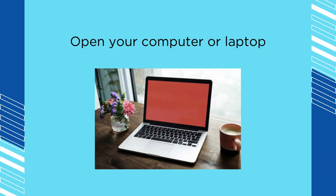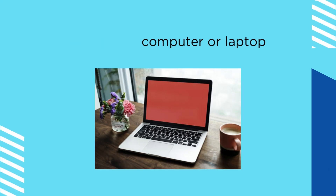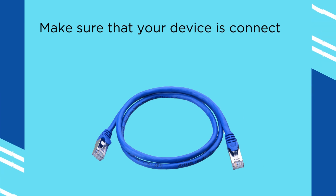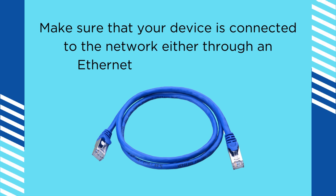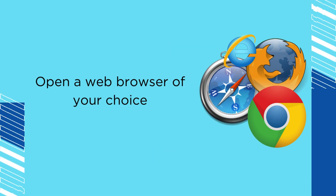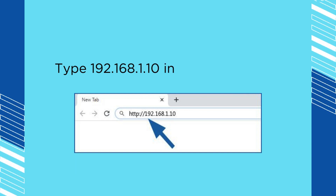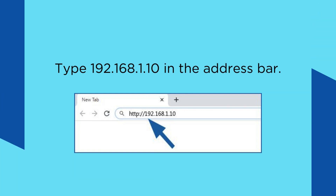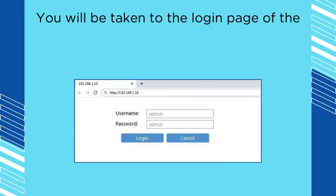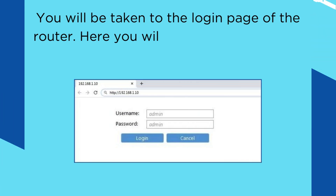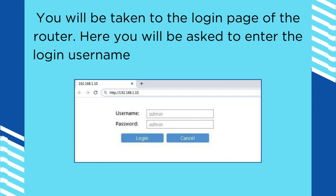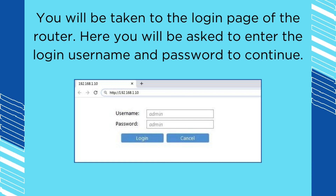Open your computer or laptop. Make sure that your device is connected to the network either through an Ethernet cable or wirelessly. Open a web browser of your choice. Type 192.168.1.10 in the address bar. You will be taken to the login page of the router.